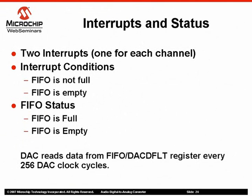The audio DAC provides two interrupts, one for each channel. Depending on the setting of the interrupt configuration bits — LI type for the left channel and RI type for the right channel — and the DAC status register, the DAC interrupt is triggered by either a FIFO empty or a FIFO not full condition. The FIFO empty interrupt can be used with the audio DAC to maximize throughput while minimizing the impact of interrupts on the CPU. The FIFO empty interrupt is the simplest and preferred interrupt method for use with DMA.